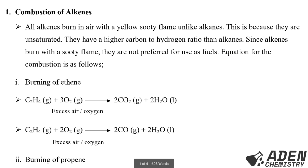The first chemical property of alkenes is combustion. All alkenes burn in air with a yellow sooty flame, unlike alkanes which burn with a blue flame. This is because alkenes are unsaturated hydrocarbons — they have a higher carbon to hydrogen ratio than alkanes. Since alkenes burn with a yellow sooty flame, they are not preferred for use as fuels like alkanes.